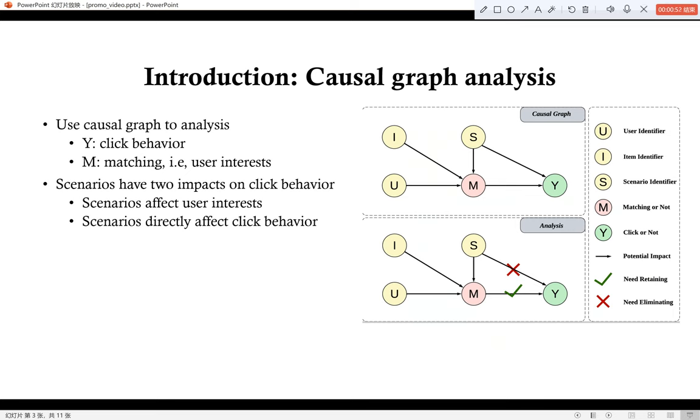So we use a causal graph to analyze it. These scenarios have two impacts. They first affect user interests, and then user interests affect click behavior. They also directly affect click behaviors. For example, a scenario may have noticeable position or size, making users notice them in the first place.